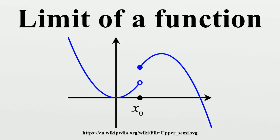Let f be a real-valued function with domain D. Let p be the limit of a sequence of elements of D. Then the limit of f is L as x approaches p if, for every sequence in D that converges to p, the sequence f converges to L. This is the same as the definition of a sequential limit obtained by regarding the subset D of ℝ as a metric space with the induced metric.